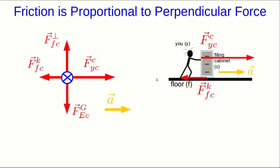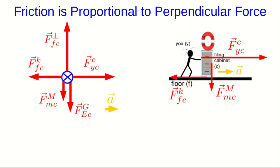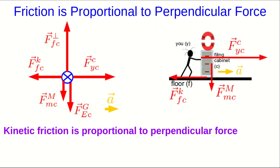A very similar thing happens with kinetic friction. If we have the cabinet sliding and we introduce an additional downward force on it — say with the magnets — so that the perpendicular force up increases, we'll always find that the kinetic friction force increases as well. The kinetic friction turns out to also be proportional to the perpendicular force.